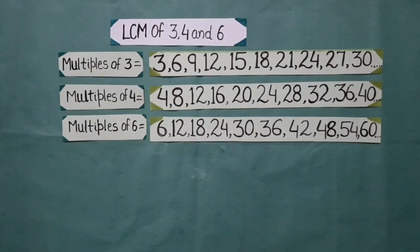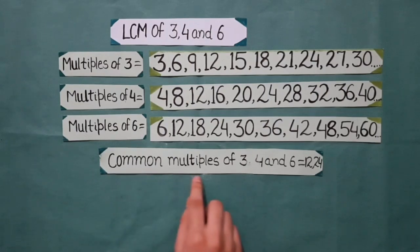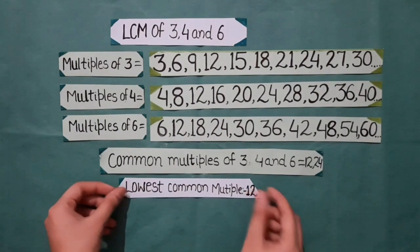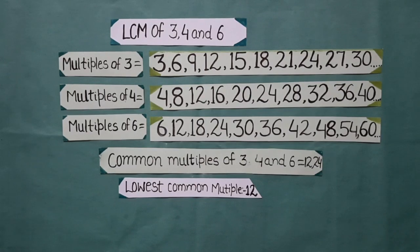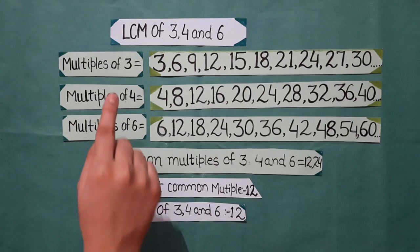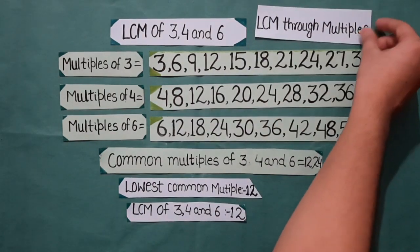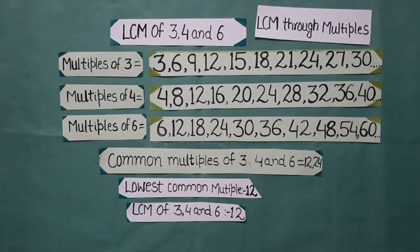Where 3 bindis of different colors were together in the same box, 12 and 24. 12 and 24 are common multiples of 3, 4 and 6, but where were 3 bindis of different colors together first, 12. So, 12 is the lowest common multiple of 3, 4 and 6. This method of finding the LCM of given numbers is multiples method.